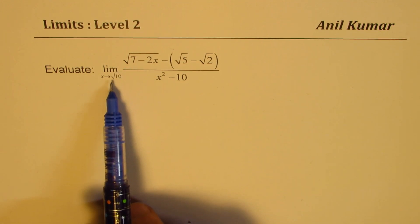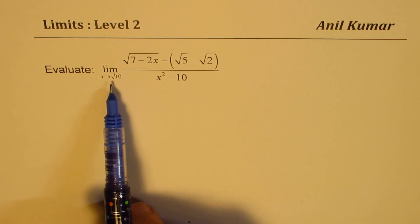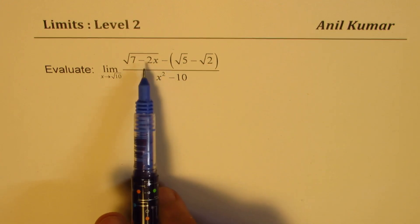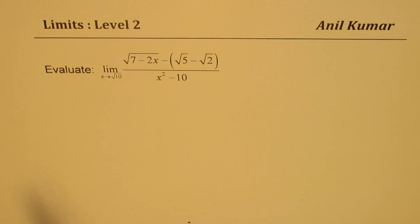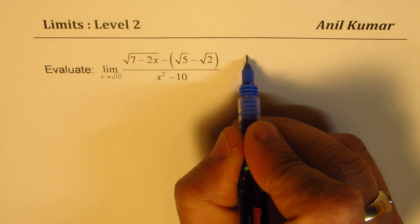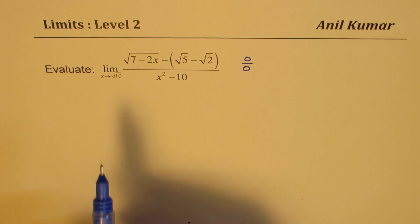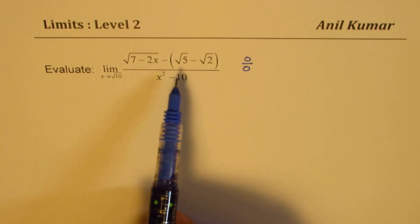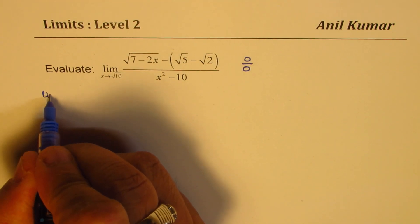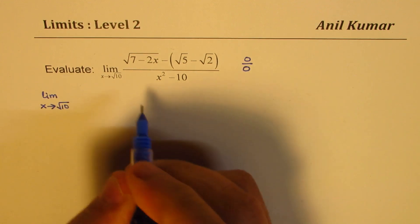Now if I substitute square root of 10 we get 0 in the denominator, and if I substitute square root of 10 in the numerator, it is also 0. So what we observe here is that it is a form of 0 by 0, so we could actually find the limit by rationalization.